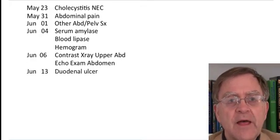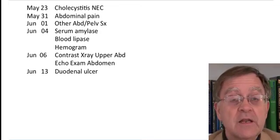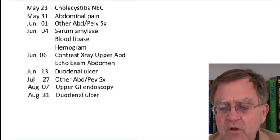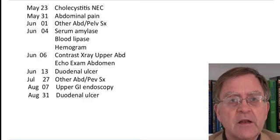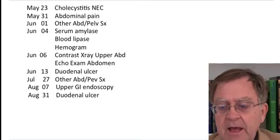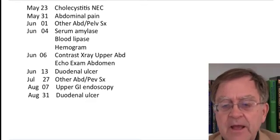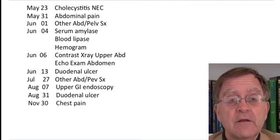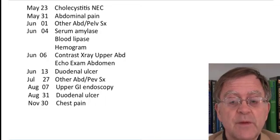Following that pair of diagnostic examinations, she gets a diagnosis of duodenal ulcer. Later in July, she gets a nonspecific diagnosis again of other abdominal and pelvic symptoms, gets upper GI endoscopy, and has a diagnosis of duodenal ulcer. At the end of the fall, she also has another diagnosis of chest pain.